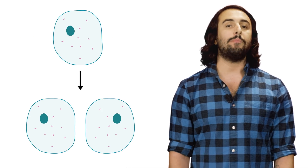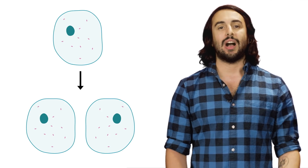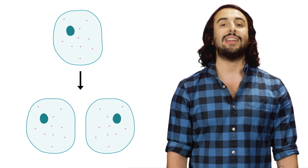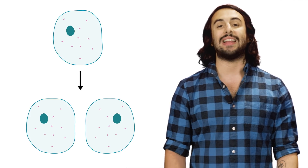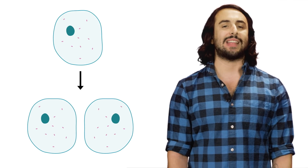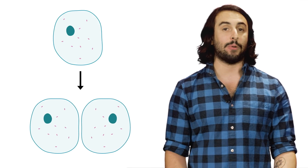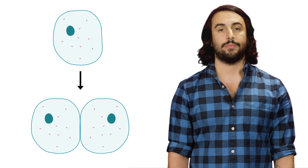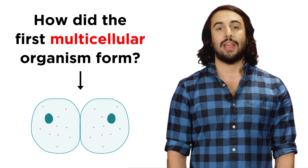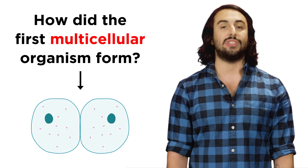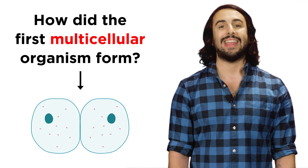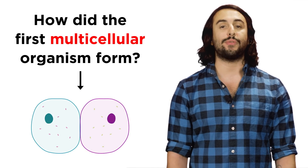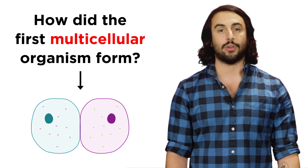At some point in biological history, a single cell divided into two identical cells, but instead of staying separate, they stuck together. How did they do this, and how do different cells in the same organism become different from one another?